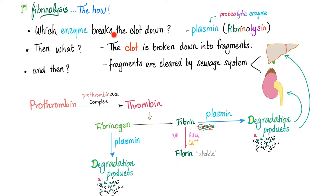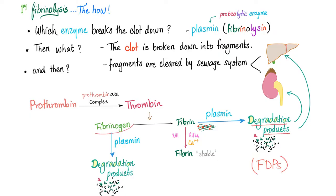What enzyme do you use to break down the clot? We call it plasmin. It's a proteolytic enzyme, which makes sense because fibrin is a protein. If an enzyme degrades or cuts down this fibrin, it's called a proteolytic enzyme — lysis to the protein. Then this clot is broken down into fragments: we break fibrin down into fibrin degradation products, also known as FDPs or fibrin split products.